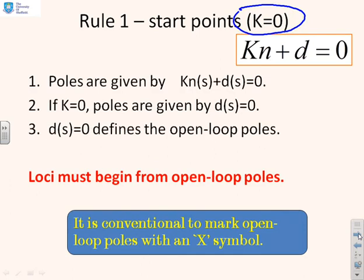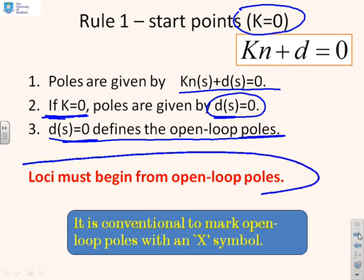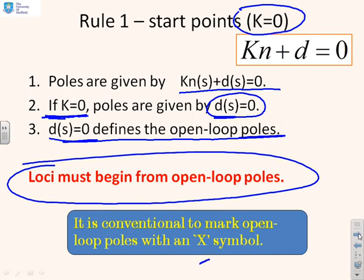Starting from K·N + D = 0, if K equals zero, what we're left with is just D. So the closed-loop poles are given by D = 0. Since D(s) defines the open-loop poles, the key conclusion is that the loci must begin from the open-loop poles. If you've got no feedback — K equals zero — then clearly your poles are your open-loop poles. It's conventional to mark open-loop poles with an X symbol.